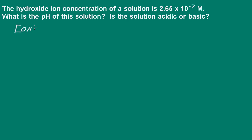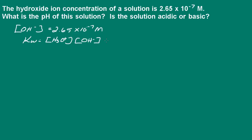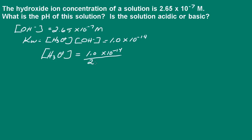Let's go ahead and write this out. So we have a hydroxide ion concentration of 2.65 times 10 to the negative 7 molar. There are a couple of different ways I could do this problem, but I'm going to determine the hydronium ion concentration using Kw. Remember, Kw is hydronium ion concentration times the hydroxide ion concentration, and that is equal to 1 times 10 to the negative 14. So I'm going to solve for hydronium ion concentration: that's 1.0 times 10 to the negative 14, divided by 2.65 times 10 to the negative 7.